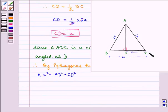AC is given to us as 2A. So, (2A)² is equal to AD² plus CD. We have found CD is A, so plus A². Now, it is equal to 4A² equals AD² plus A².